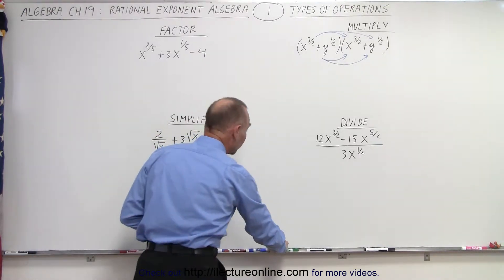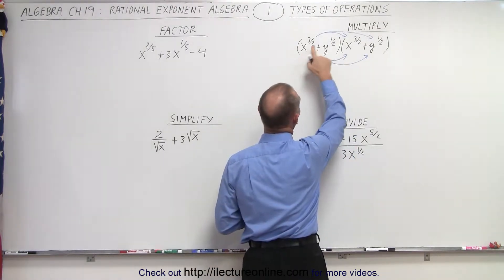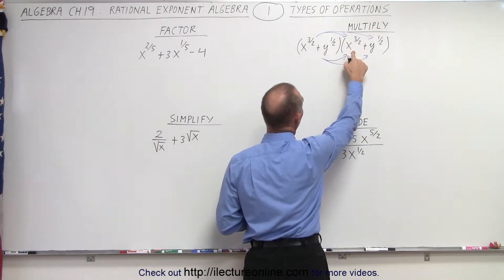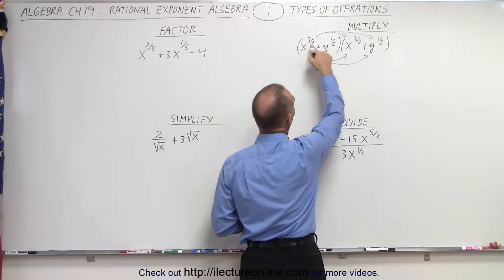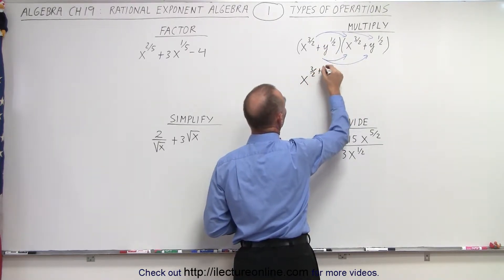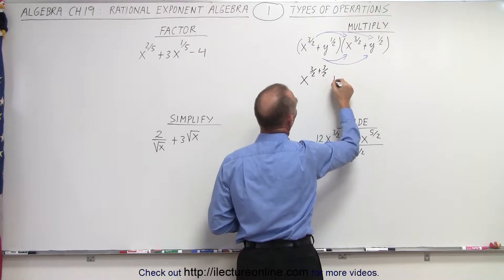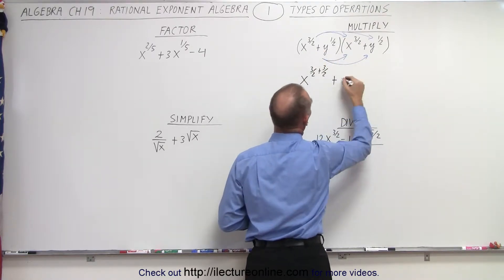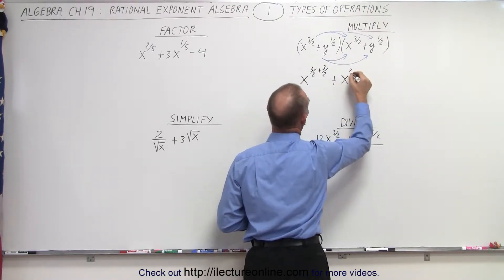Let's start out with multiplying. Here we have x to the 3 halves times x to the 3 halves. When the bases are the same, we add exponents. 3 halves plus 3 halves — let's just write it out. Plus, when we multiply this times this, we get x squared... x to the 3 halves power.